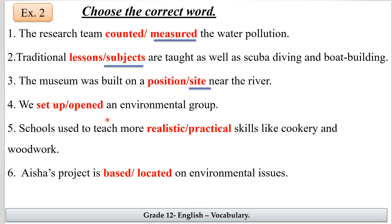Number four: we set up or opened an environmental group. 'Set up' means to establish, to prepare something for use, organizing different parts — so the answer is 'set up an environmental group.' Number five: schools used to teach more realistic or practical skills like cookery and woodwork. Cooking and woodwork are real-world skills, not just ideas, so the answer is 'practical.' Number six: Asia's project is based or located on environmental issues — it's 'based on.'